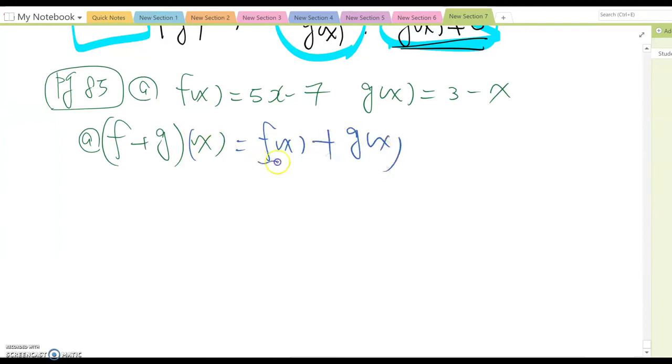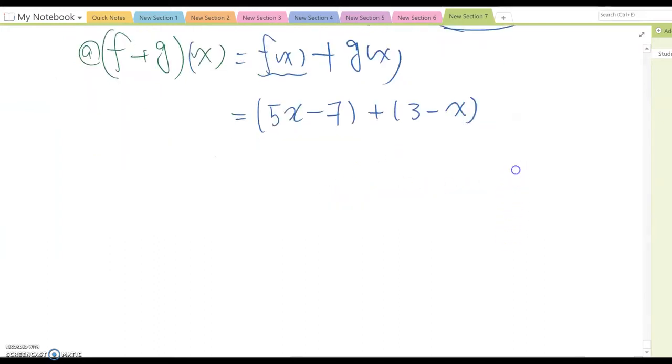Then what is f(x) here? Yes, f(x) is this one, and then g(x) is this one. Therefore this becomes (5x - 7) plus (3 - x). And then you may notice that I put them into the parentheses like that, right? The reason is when you switch function form to expression form, you better put it into the parentheses so later you won't make any sign mistake or calculus mistake.